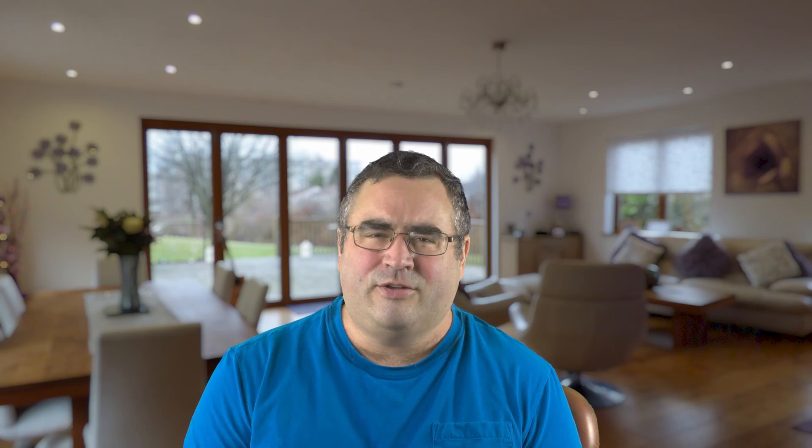When these certificates become powerful is when the signature associated with the given key is signed with a different key pair than the one contained within the certificate. This allows the party owning the self-signed certificate to vouch for this additional certificate. Now, this chain can be arbitrarily long, although it's generally kept to just one or two levels. Beyond this, trust gets kind of complicated to reason about, and the keys are easier to mismanage.